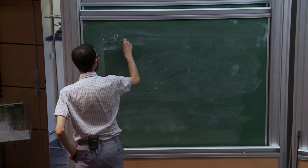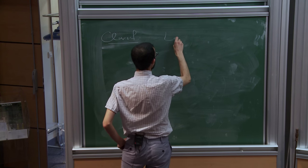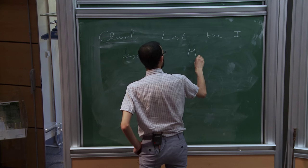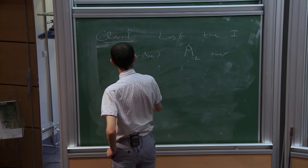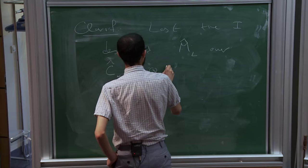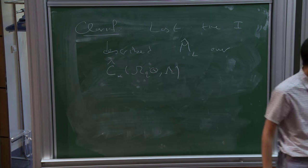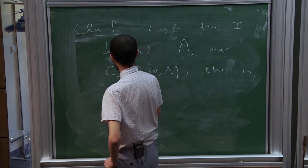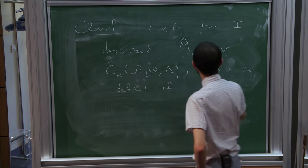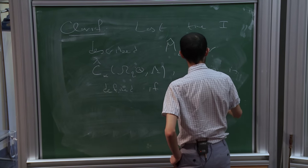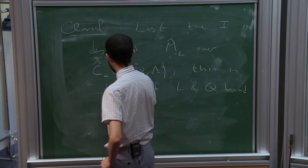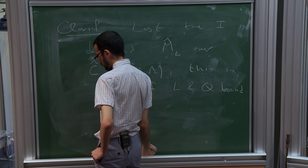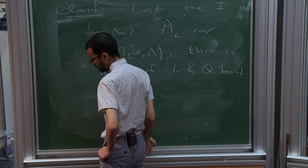Let me start with some clarification. Last time I described a module called M̂_L over chains on the base loop space Q. I said that this is an invariant. In order for things to actually work, this is defined if L and Q bound no disks. So the first thing I want to do is give some context for where this module is coming from, and more generally, what happens if there are disks.